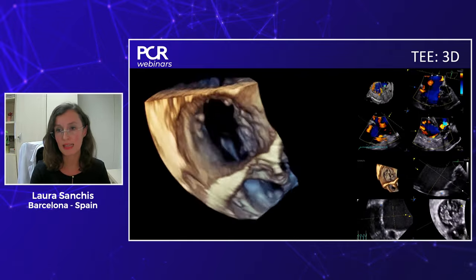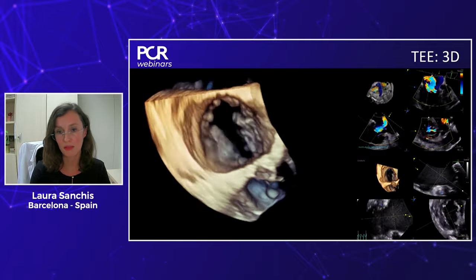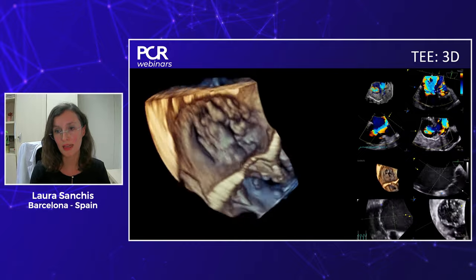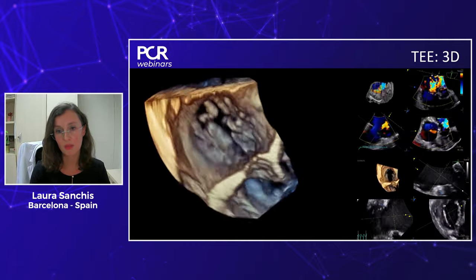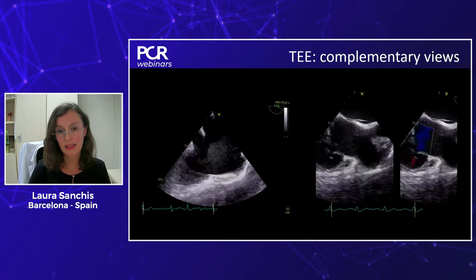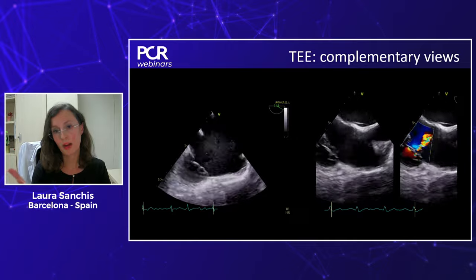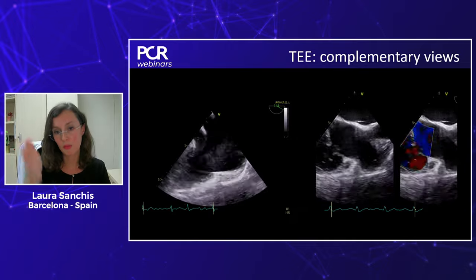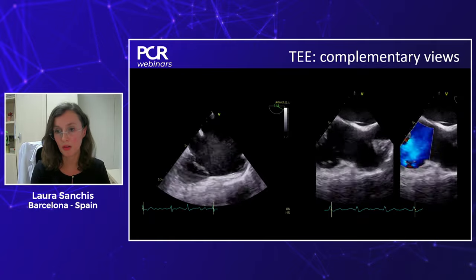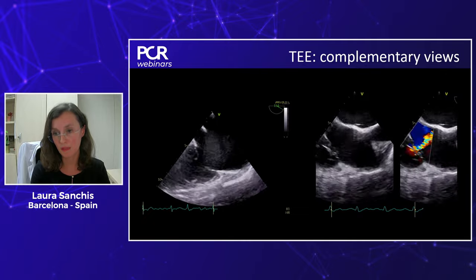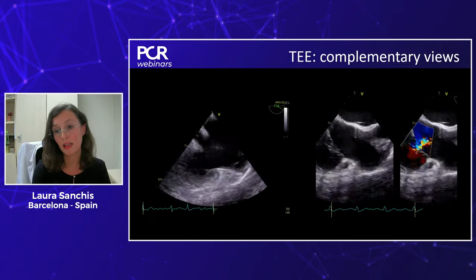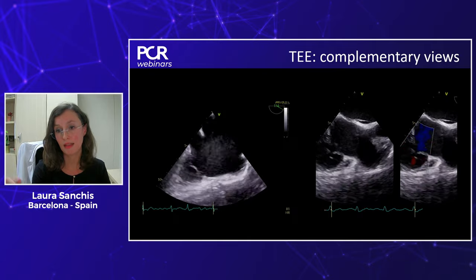If you have a nice 3D, put the aorta at five o'clock to mimic the position of the leaflets in the transgastric short axis view. You can measure the vena contracta area in 3D and take annulus measurements using MPR. Other complementary views include the direct view at 150 or 70 degrees obtained when you put the biplane in the inflow-outflow, and the modified bicaval view — useful for good alignment for Doppler measurements and for 3D acquisition excluding the interatrial septum.